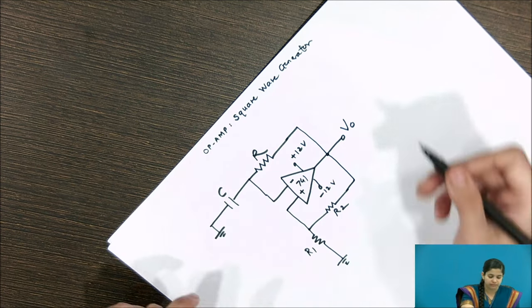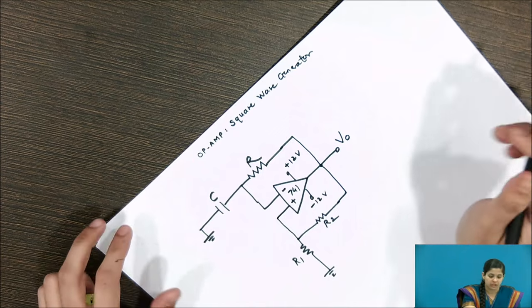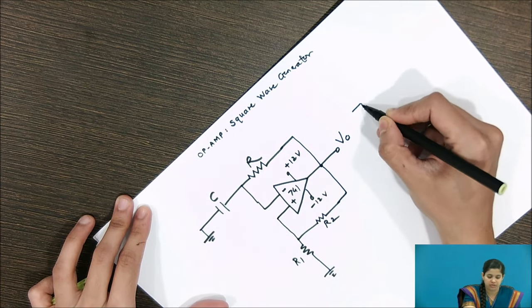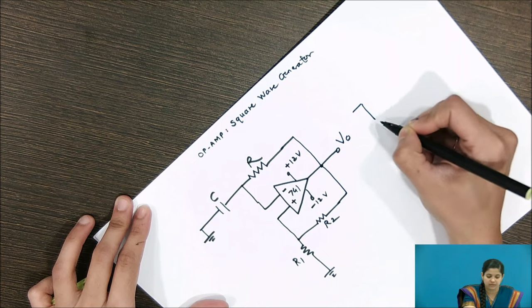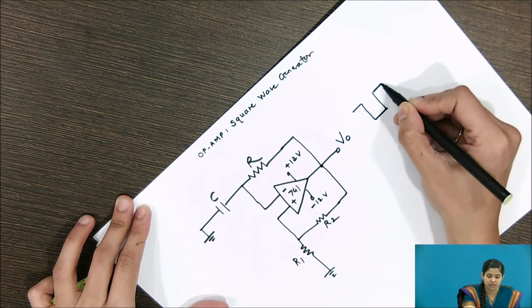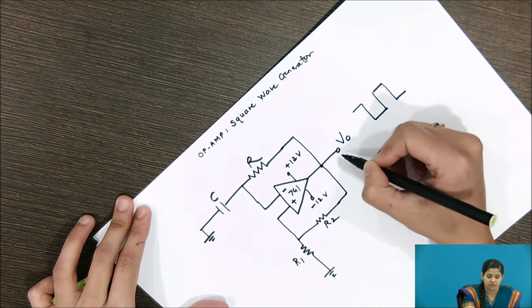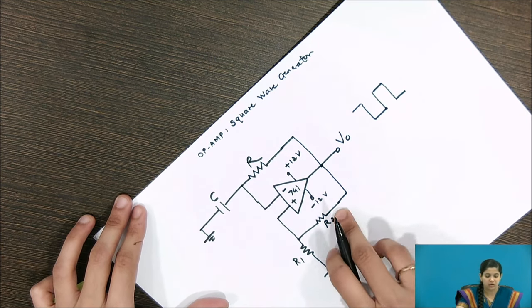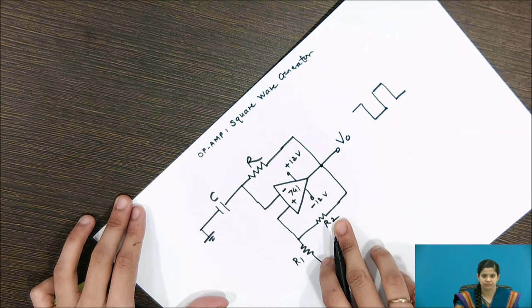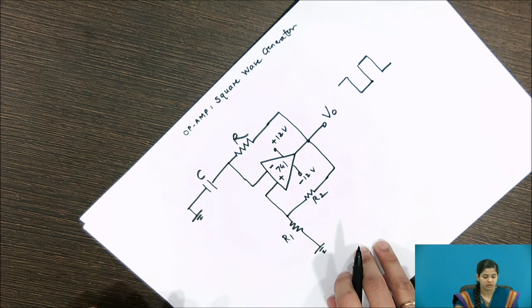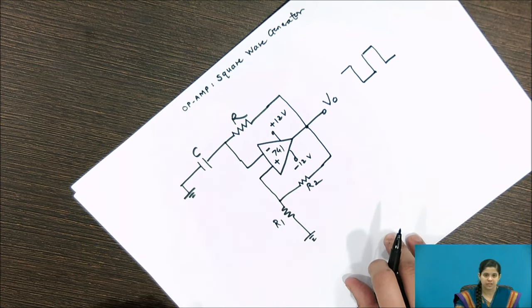At the output, if we force the output to switch between the positive saturation voltage and the negative saturation voltage, we can achieve a square wave as the output from this operational amplifier circuit. It is called a square wave generator, also known as an astable multivibrator or free-running multivibrator. Now let us see the working of this.